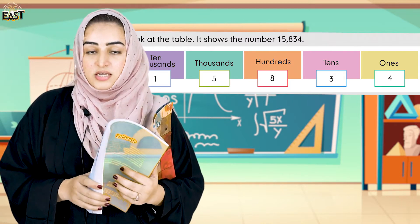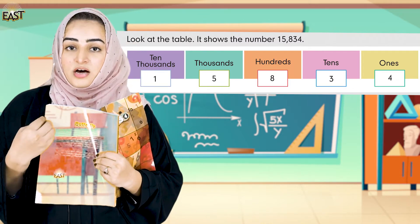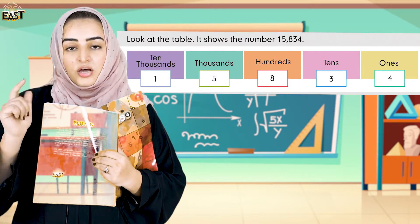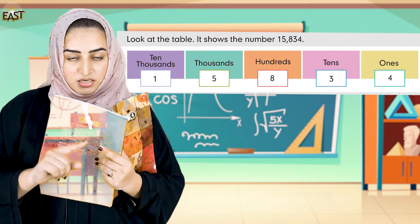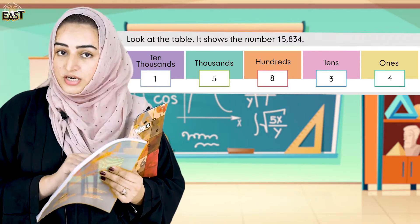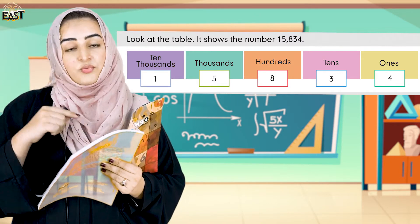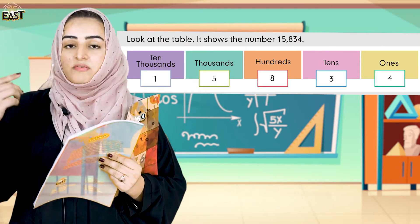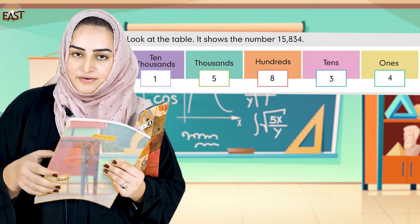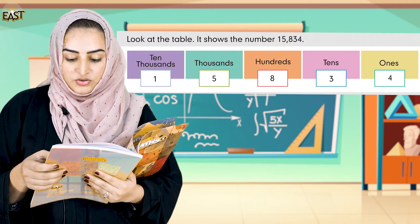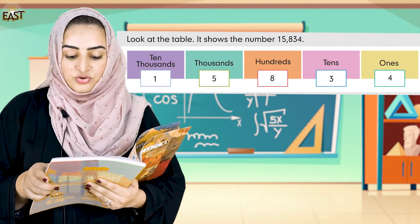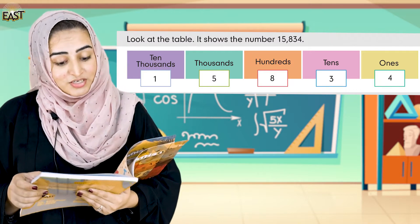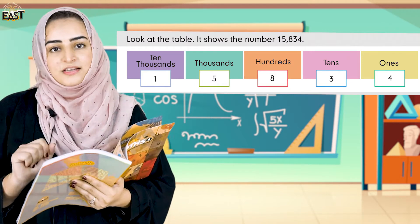How can we do this? We just have to start putting our number from the left side. When we will read it, we will read it from the right side, and when we will write it or put it in the place value, we will start from the left side. So you see: four in ones, three in tens, eight in hundreds, five in thousands, and one in ten thousands.